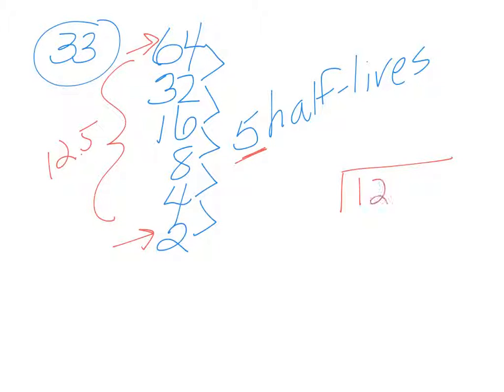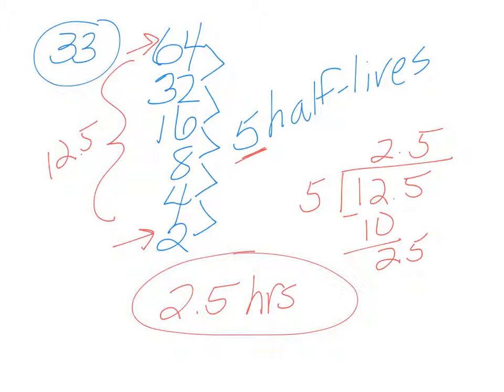So I'm going to take 12.5, divide it by 5 times it went down by half. And I'll do my long division here, and I get 2.5. So this is not years. The problem says hours. So I need to make sure my answer's in hours. 2.5 hours.